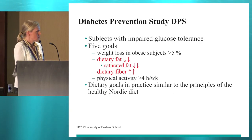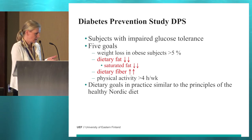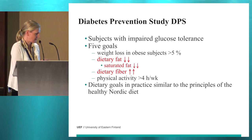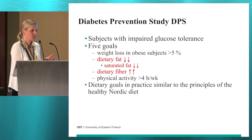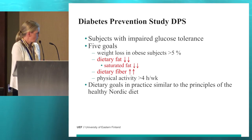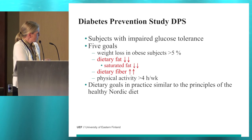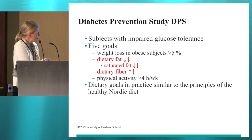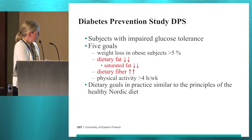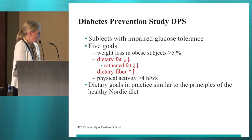As Ulf pointed out, the diabetes prevention studies actually very thoroughly followed the principles of a healthy Nordic diet, because it was performed at my department and I know exactly how the subjects were instructed. No one talked about healthy Nordic diet at that time — this was launched in 1993 — but I think we can consider this as a study applying principles of the healthy Nordic diet. There was weight loss in obese subjects; if you weren't obese, you didn't need to lose weight. Dietary fat was around 30% of energy, saturated fat below 10% of energy, and dietary fiber 15 grams per 1,000 kilocalories. Physical activity at least more than four hours per week.